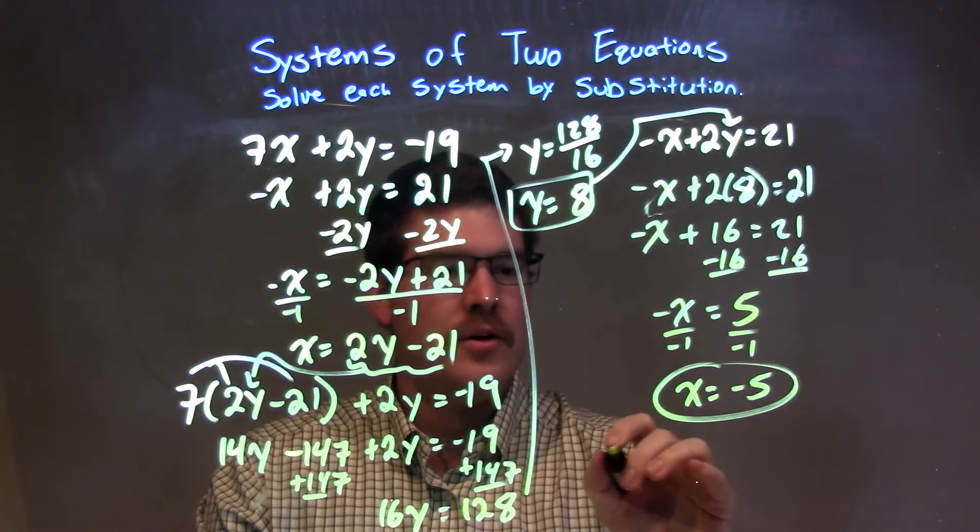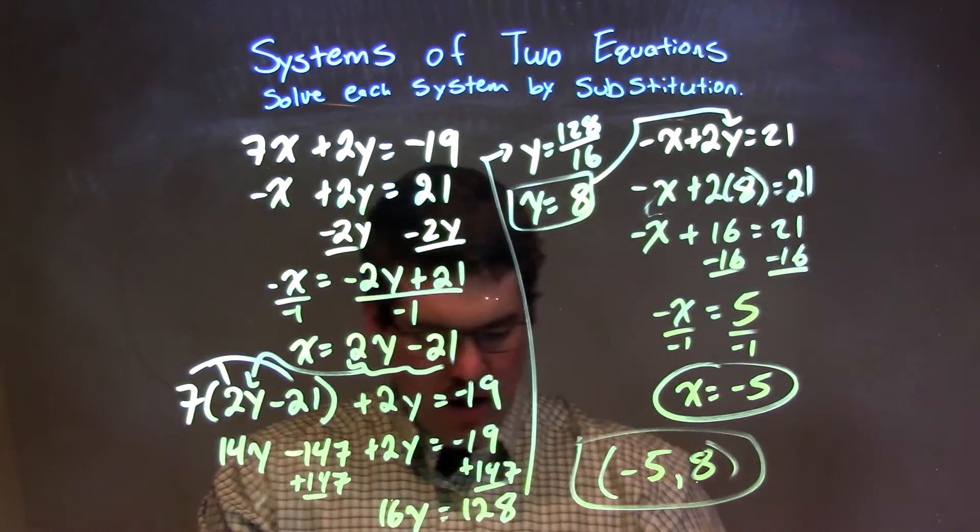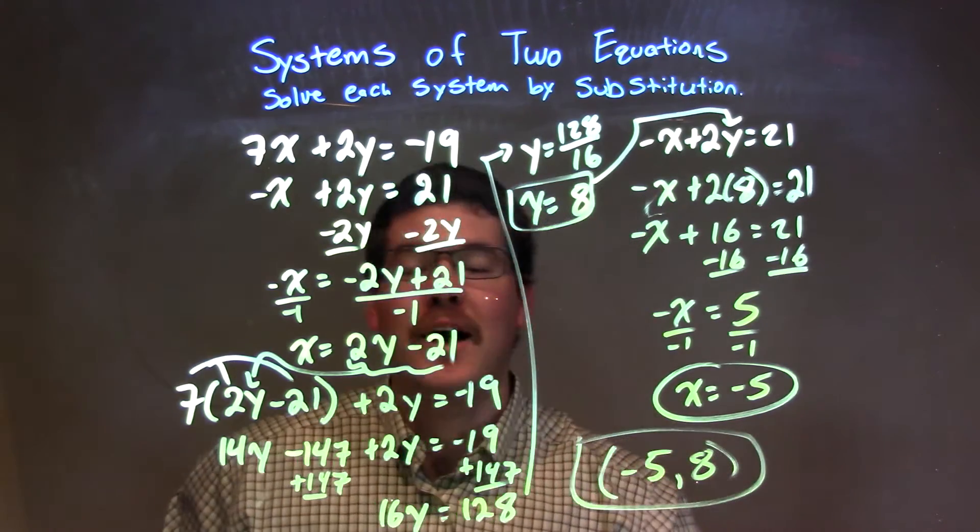So we have our x, our y value, coordinate point, can be written together as negative 5 comma 8, and there we have it. Our final answer is negative 5 comma 8.